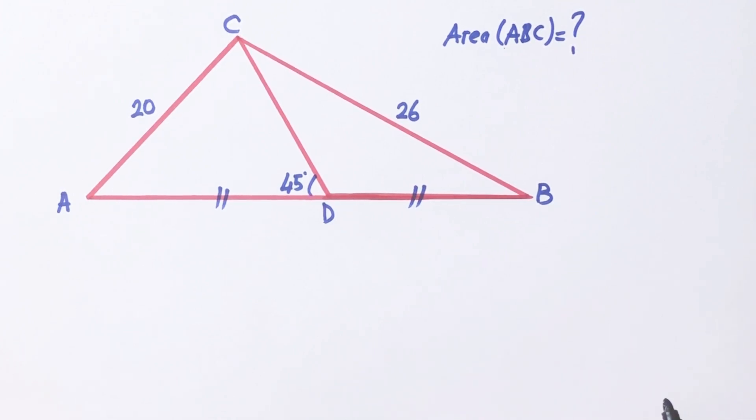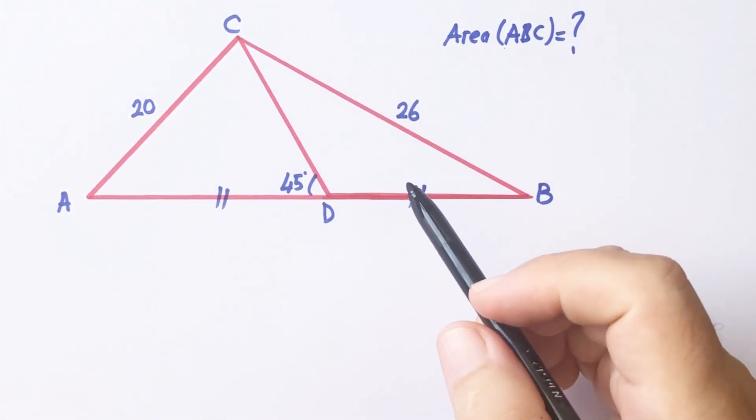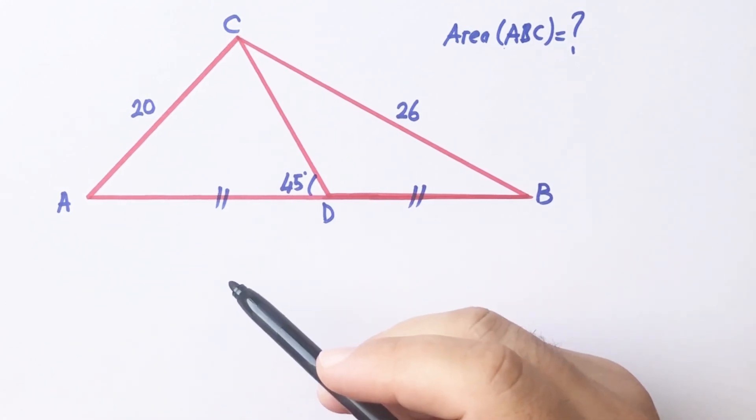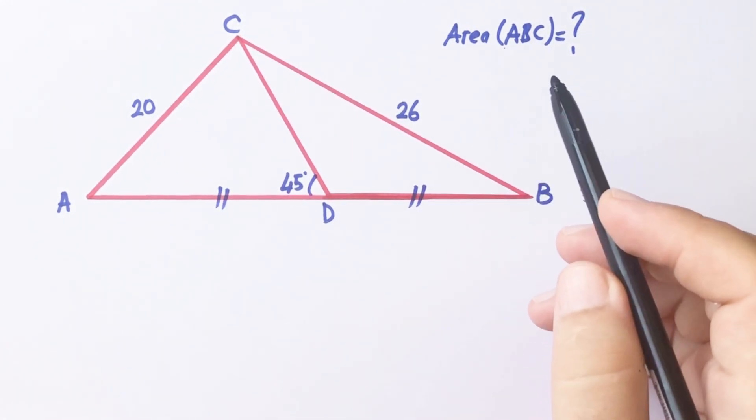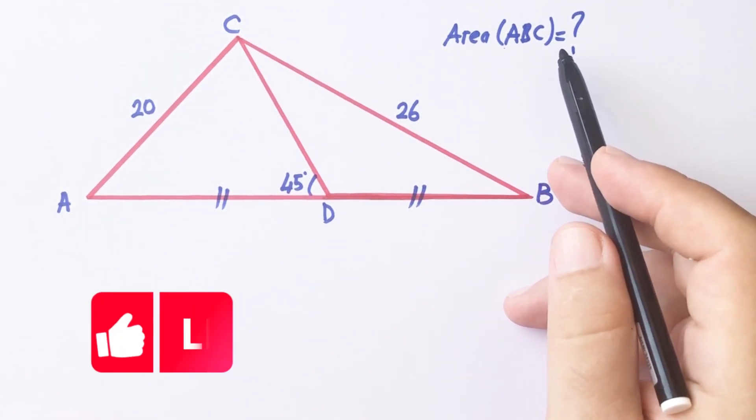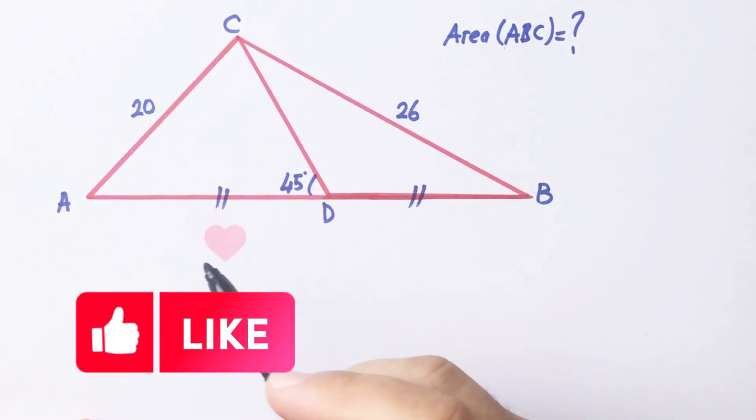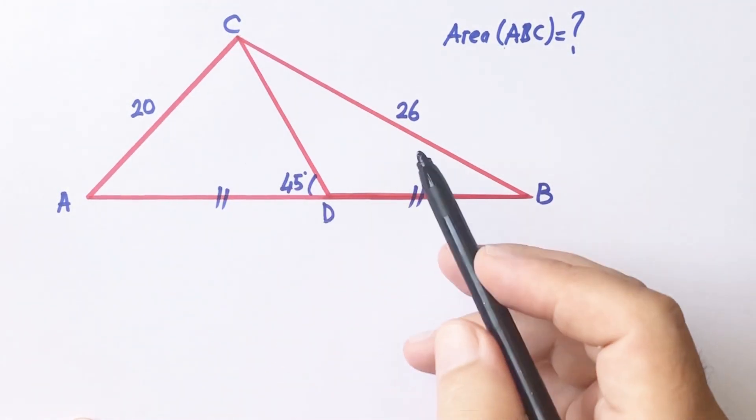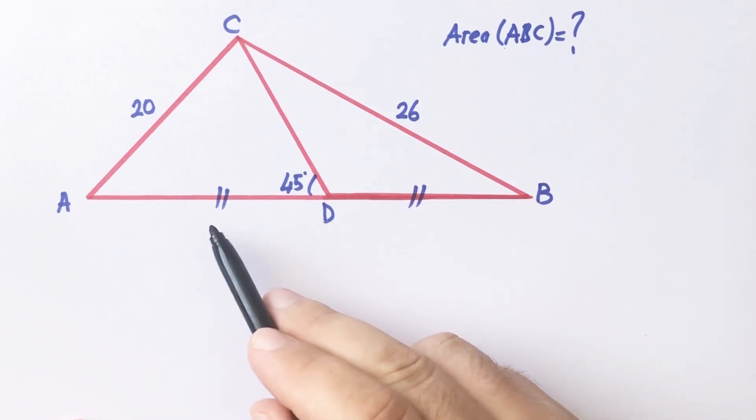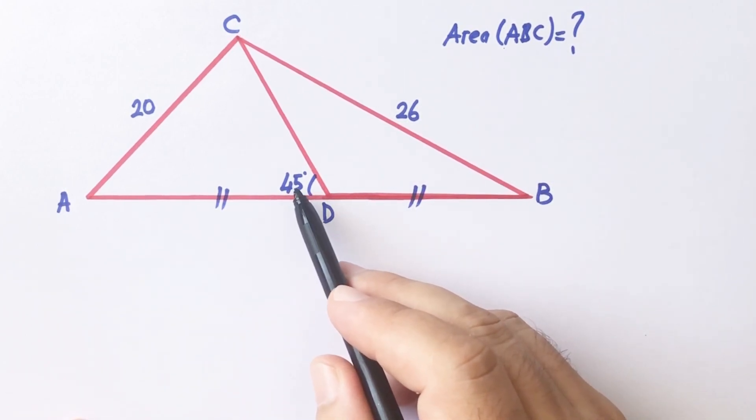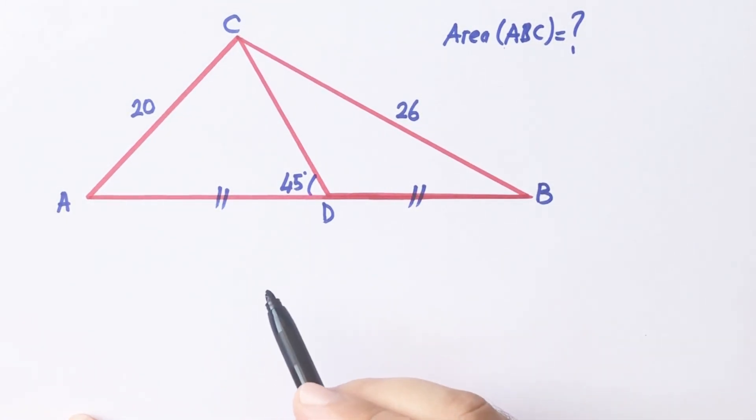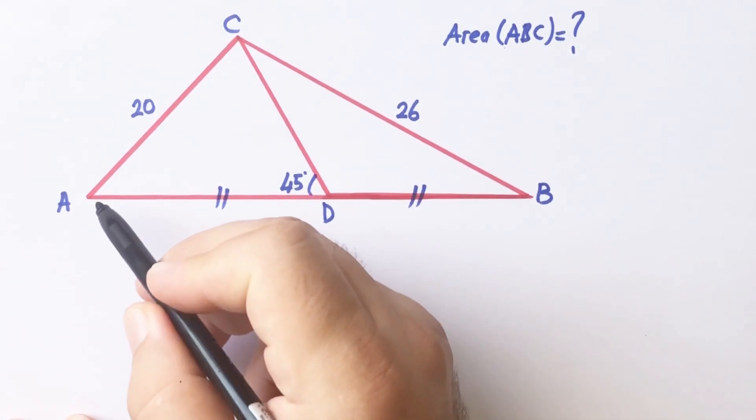Hello everyone, in this video we have a nice question. Some lengths are given: here is 20, here is 26, two parts are equal, and here is 45 degrees, and the area is asked.